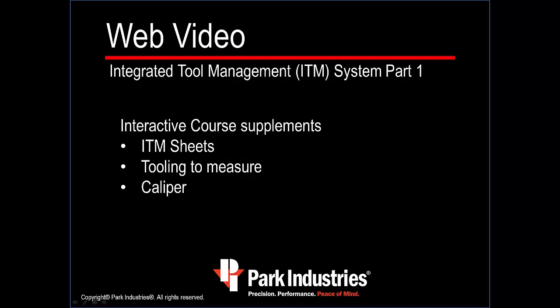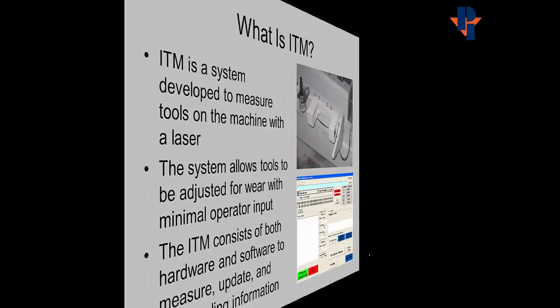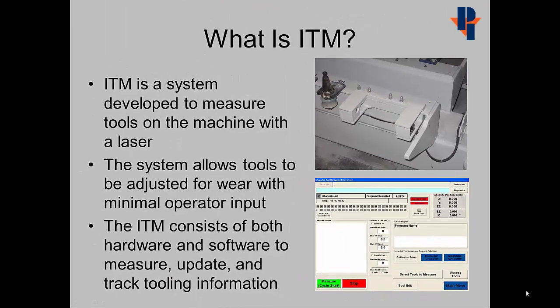If you'd like to follow along you will need ITM sheets, some tooling to measure, and a caliper. ITM is a system developed to measure tools on the machine with a laser. The system allows tools to be adjusted for wear with minimal operator input. The ITM consists of both hardware and software to measure, update, and track tooling information.